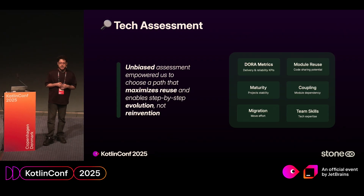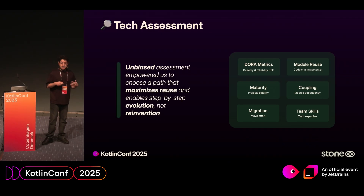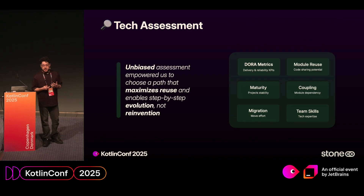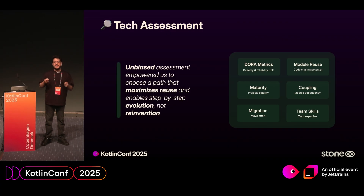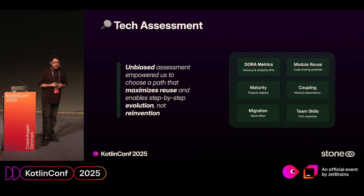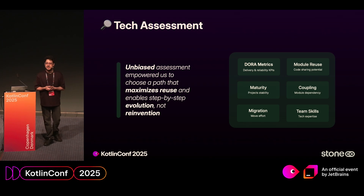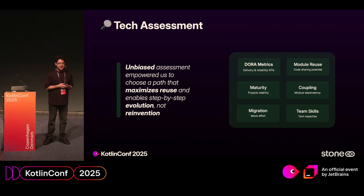With our tribe in place, we did a very deep tech assessment. We hired a third-party company to do an unbiased assessment of our code base. We started collecting lots of metrics about our repositories — like the DORA metrics, which track delivery ability KPIs; module re-usage, to see how much of the existing code could be shared; project maturity like build time, quality, and R&Rs; coupling, to understand how coupled modules are; migration effort to introduce a new technology; and our team's skills on how we could use that new technology. Our goal was not to reinvent the wheel — we wanted to maximize the assets we already had and not adopt something that would completely replace our code base.